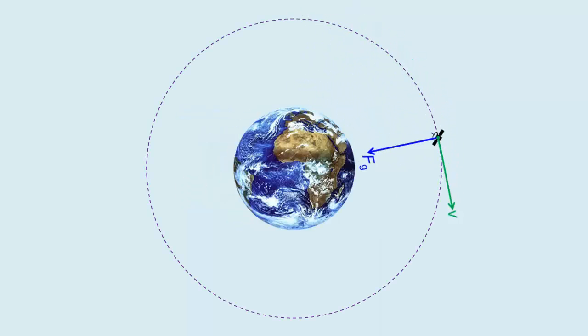So the satellite neither drops down nor rises up, but stays at the same altitude as it goes round and round the Earth.